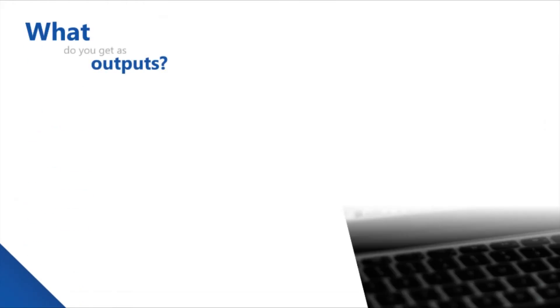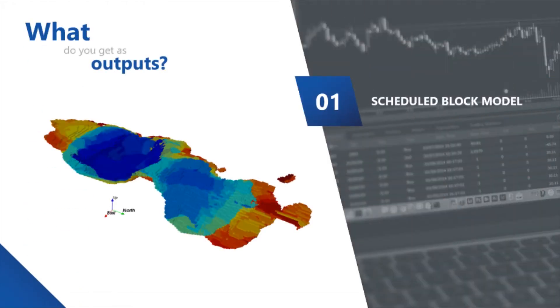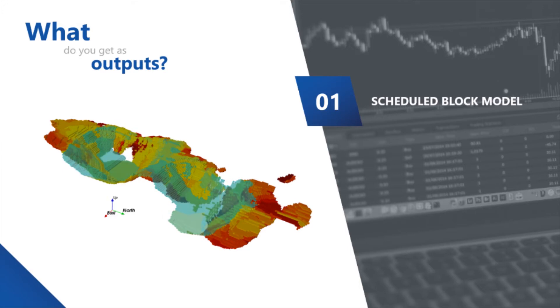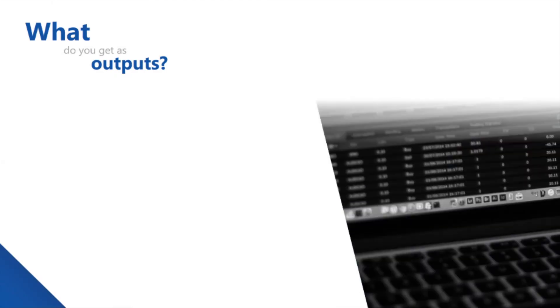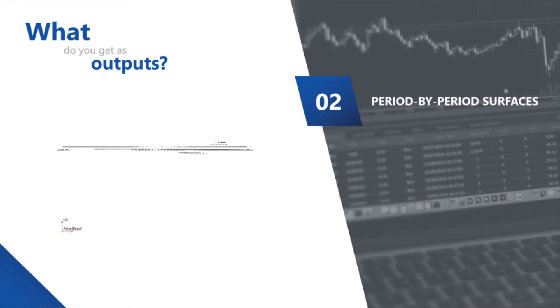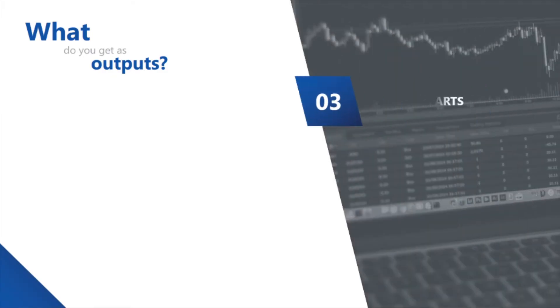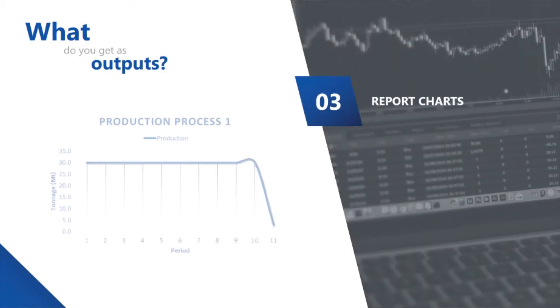These are the outputs of SimSched DBS. The colors represent the periods of the extraction sequence, and it is not a spotty mathematical solution. It generates surfaces that represent the end of each extraction period, which can be imported into another tool for designing. Charts and reports are automatically exported to Excel.